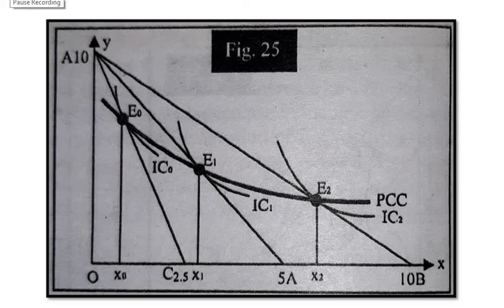Price consumption curve shows how the rational consumer purchases respond to changes in the price ratio with money income remaining constant. Price consumption curve also confirms that as price of X falls, ordinal utility of the consumer rises, while when price of X rises, ordinal utility of the consumer falls. The price consumption curve intersects each IC only once.